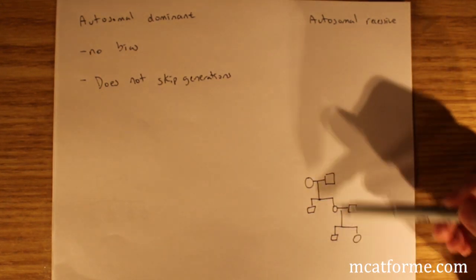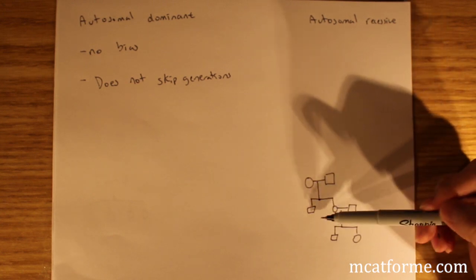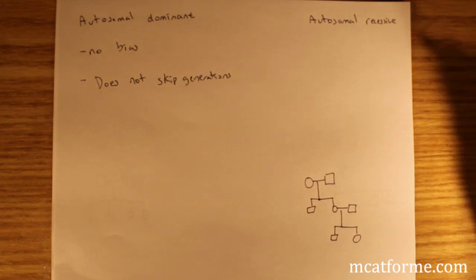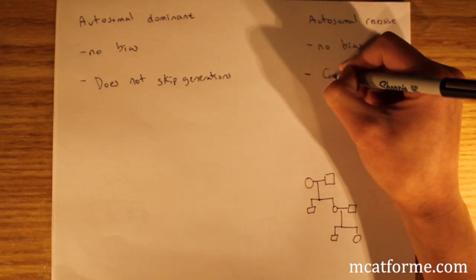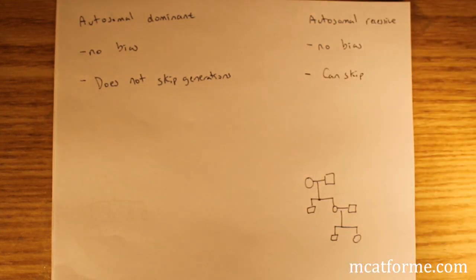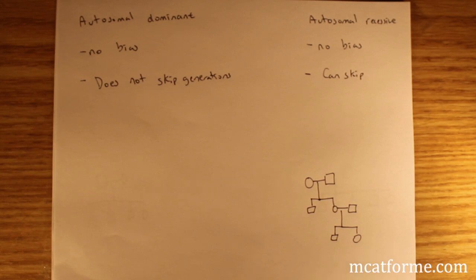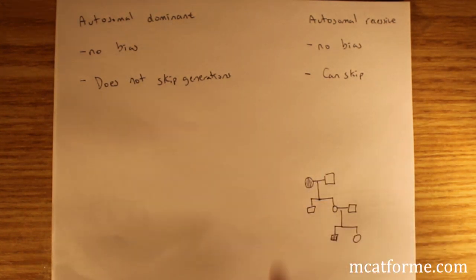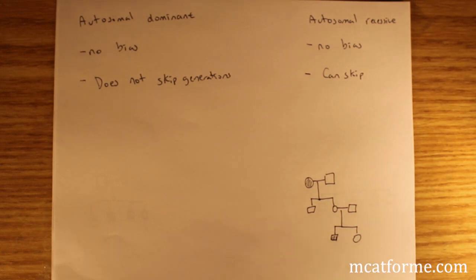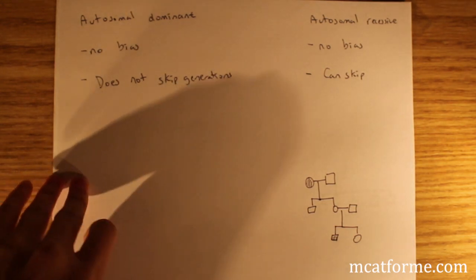Versus recessive, it can skip generations. So the grandmother has it, but the kids don't have it, but then the grandkids have it. Autosomal recessive means there's no bias, but it can skip generations. For example, if the grandmother has it and all the way down the grandson has it — you skip generations. There's really no bias in terms of sexes, who gets it over another, because a female has it and the male has it.